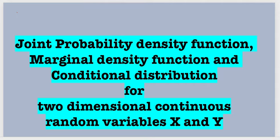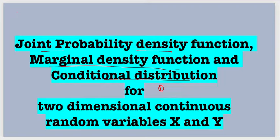Hello everyone. In this video I am going to share with you about the concept of a joint probability density function, the marginal density function, and conditional distribution for the continuous random variable of two variables x and y. For that I will discuss two examples. In the first example I will take constant limits for both x and y, and for the second example I will consider variable limits so that you get an idea how to handle both situations.